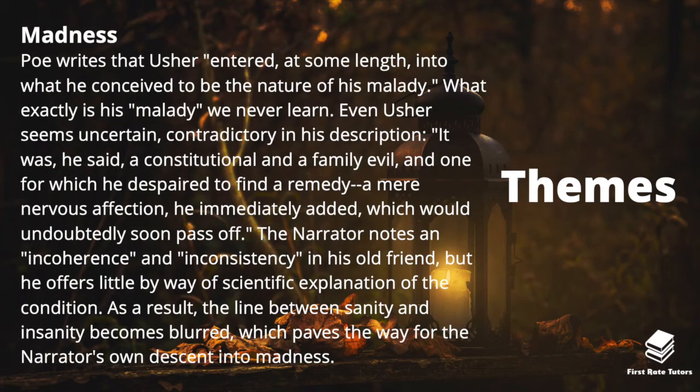The other theme is madness. Poe writes that Usher 'entered at some length into what he conceived to be the nature of his malady.' What exactly his malady is we never learn. Even Usher seems uncertain — contradictory — describing it as 'a constitutional and family evil, and one for which he despaired to find a remedy,' yet calling it 'a mere nervous affection which would undoubtedly soon pass off.' The narrator notes incoherence in his old friend but offers little scientific explanation, so the line between sanity and insanity becomes blurred, paving the way for the narrator's own descent into madness.